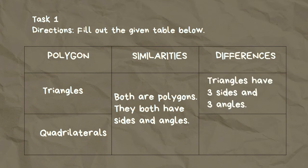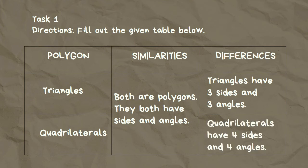Triangles have 3 sides and 3 angles, while quadrilaterals have 4 sides and 4 angles.